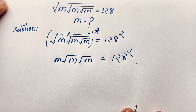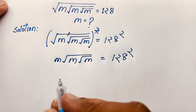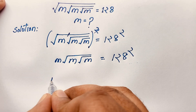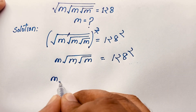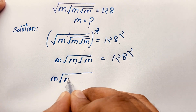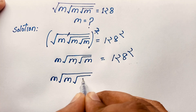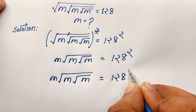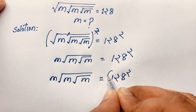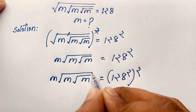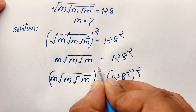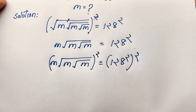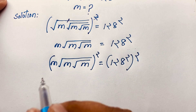Now I use both sides to the whole square again. So it will be m times square root of m times square root of m equal to 128 squared, with bracket power 2. I use both sides whole square again.